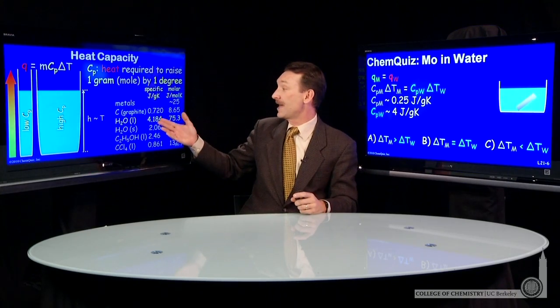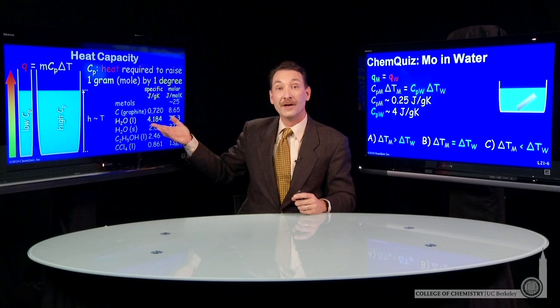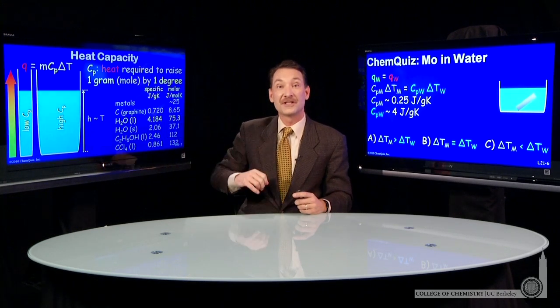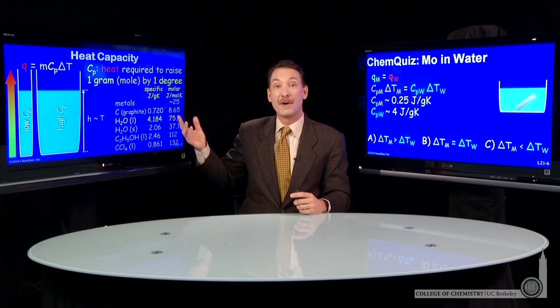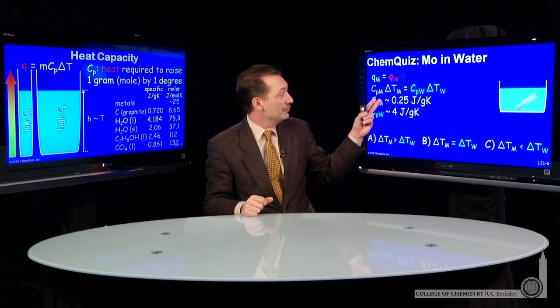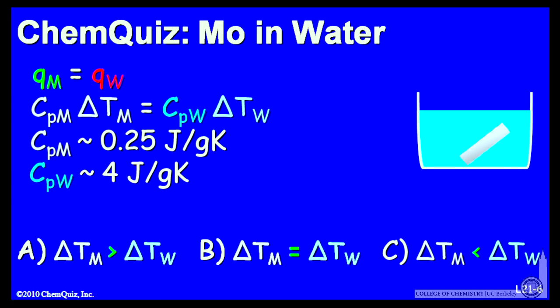Water, let's look at that heat capacity, around four joules to change the temperature of one gram of water by one degree. So the two specific heat capacities are off by a factor of 16.